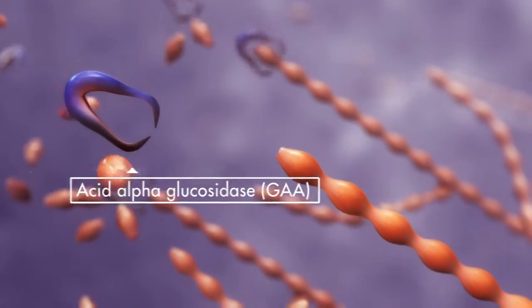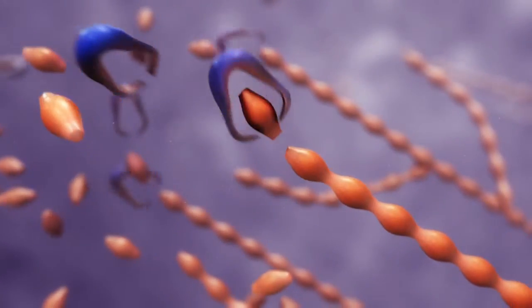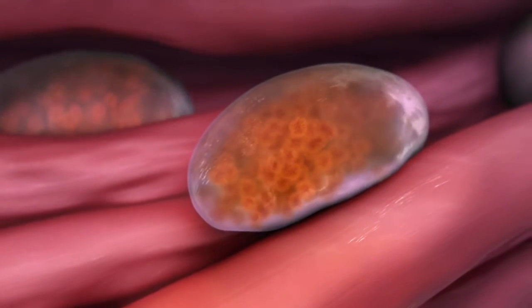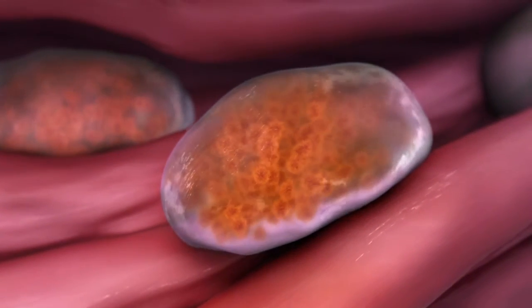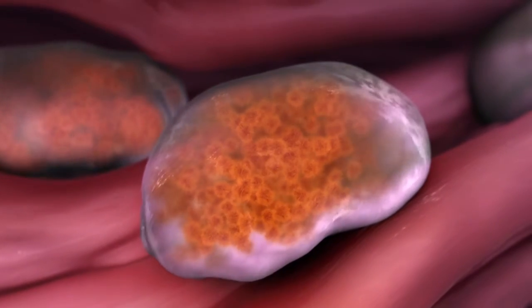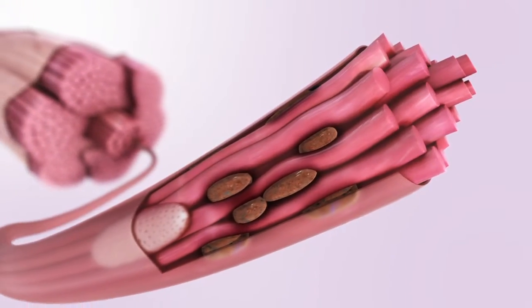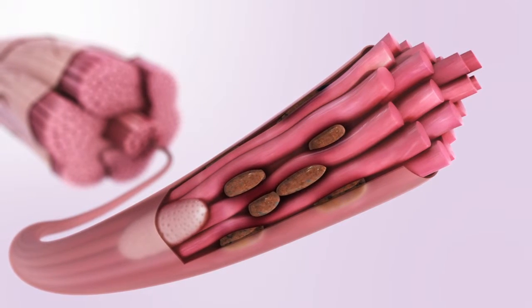Inside the lysosomes, the enzyme GAA cleaves the glycogen chains. A deficiency in the GAA enzyme level leads to an accumulation of glycogen in the lysosomes. This causes the lysosomes to swell, impairing cellular processes and damaging cell structures.